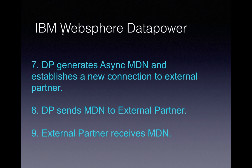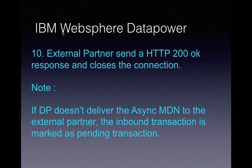The internal partner receives the message. After that, DataPower generates an asynchronous message disposition notification and establishes a new connection to the external partner. DataPower then sends that MDN to the external partner.